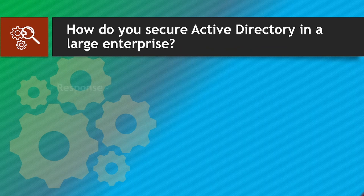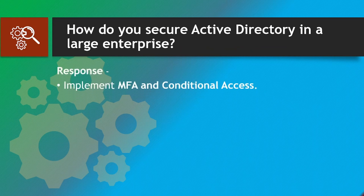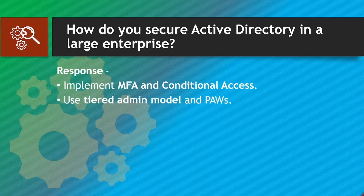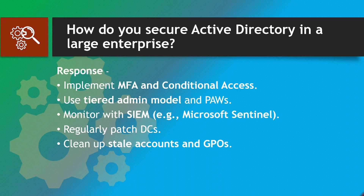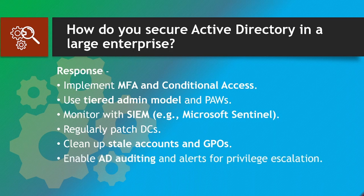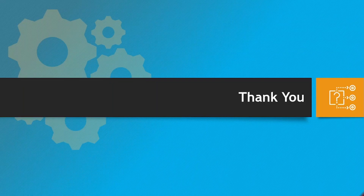How do you secure Active Directory in a large enterprise? Response: Implement MFA and conditional access, use a tiered admin model and PAWs (Privileged Access Workstations), monitor with a SIEM such as Microsoft Sentinel, regularly patch DCs, clean up stale accounts and GPOs, and enable AD auditing and alerts for privilege escalation. Thank you for watching — see you again in another video.